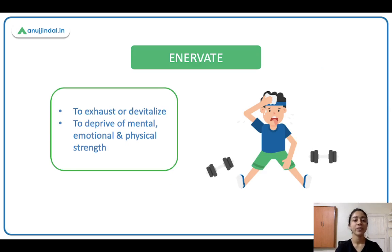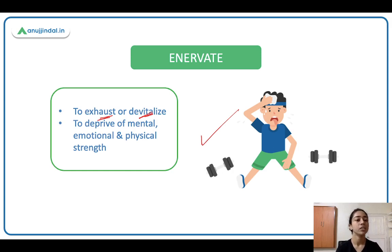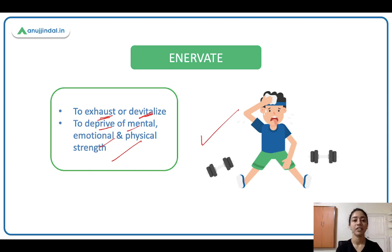Let's begin with enervate. Enervate ka matlab hai to exhaust or devitalize. We've already done devitalize and revitalize. To exhaust, to enervate — jaisi yeh workout karke thak gaya hai. So the workout enervated him, it exhausted him. To deprive of mental, emotional, and physical strength — to feel exhausted emotionally, physically, mentally, you're feeling tired.